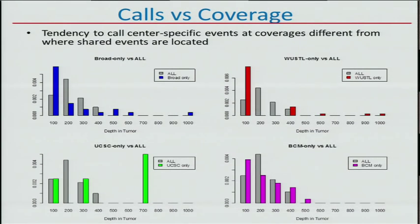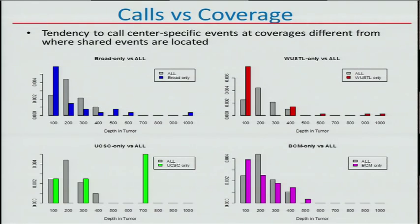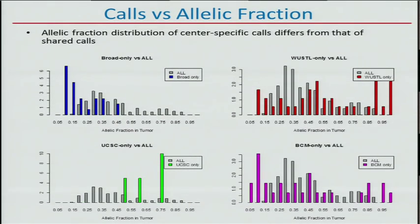Just another view at the same data is to look at the distribution of different statistics. Showing depth of coverage: gray bars represent coverage for the center of the diagram where everybody agrees, and blue bars are calls made only by Broad — biased towards lower coverage. The same applies to WashU. UCSC is more uniform. We can also look at allelic fractions and again see some difference — different callers venture into different parts of the configuration space trying to make more calls.